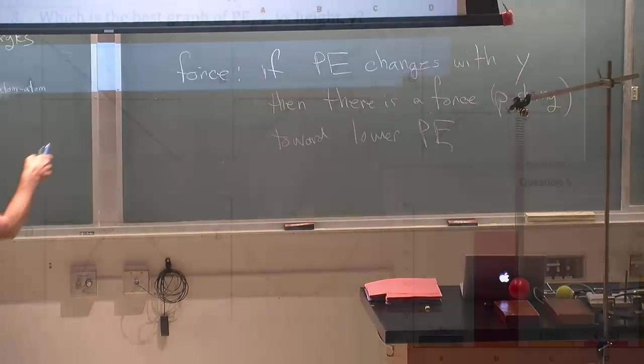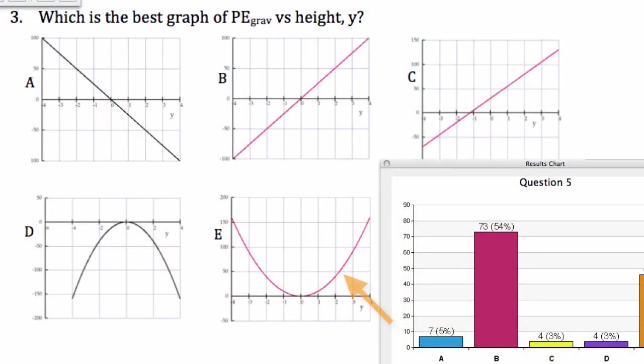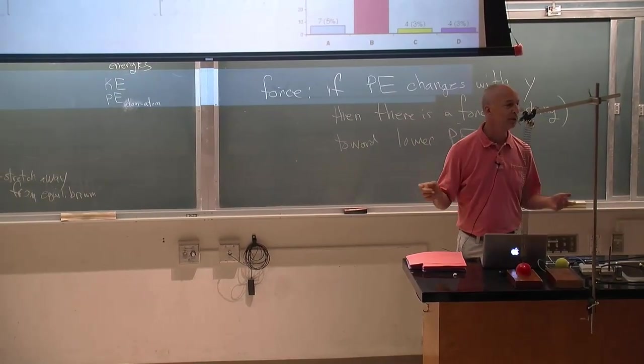There's a math issue too and that's that this isn't a straight line. This is a curve. So gravitational potential energy is a straight line as a function of height near the Earth. It's a curve, not a curve like this.